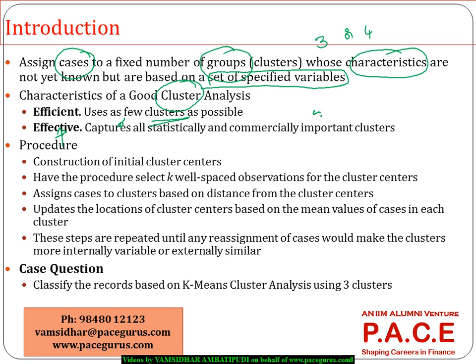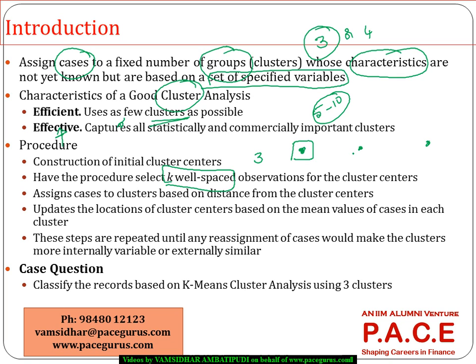Even if there are 5 or 10 records which are significantly different from the rest, the system should be able to capture them. The way it starts off is, depending on what I mention as the number of clusters required — assume 3 clusters — SPSS will take K well-spaced observations, meaning observations which have a decent amount of gap. It takes K such well-spaced observations and forms the initial cluster centers: this is the mean and center for the first cluster, this is the mean for the second, and this is the mean for the third cluster.